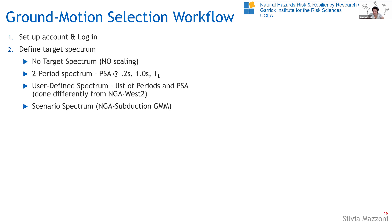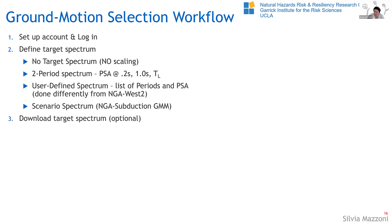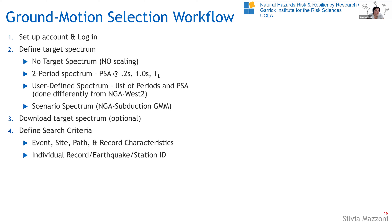For the user-defined spectrum input, I've changed it from what I had in NGA West 2. Now you paste the values directly — much easier than having to create and upload a file. This is where you would paste your USGS multi-period spectrum, so we no longer have to pre-compute from the two-period spectrum. The scenario spectrum is where you use the NGA subduction ground motion models, which have been implemented in this tool as well.